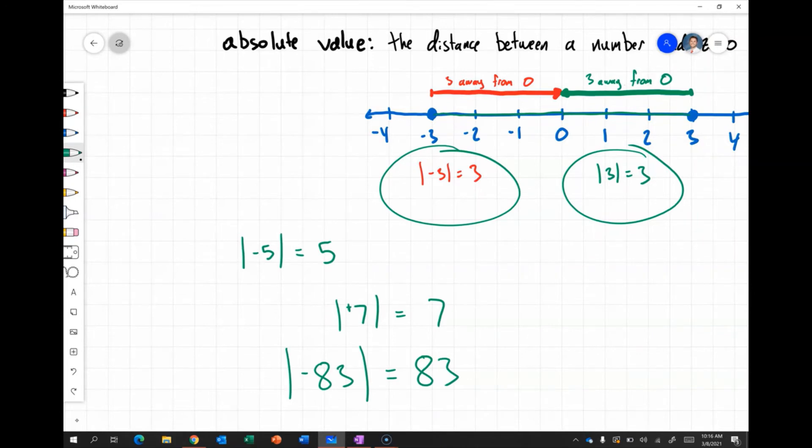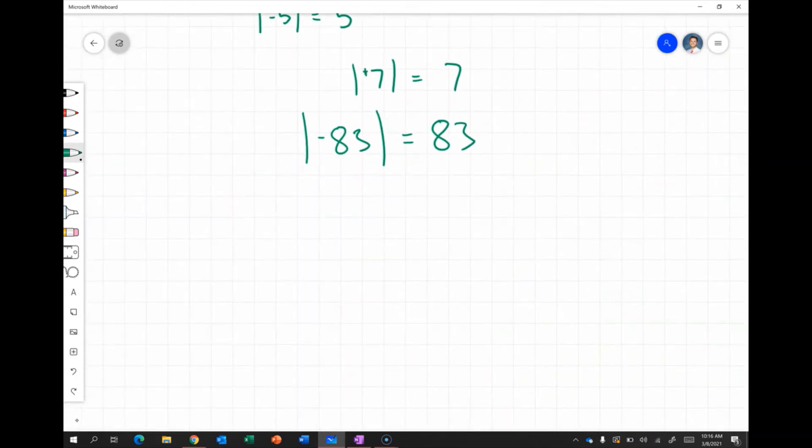Now if we wanted to compare or order values, for example, if we wanted to compare 2 and the absolute value of negative five, which is greater: 2 or the absolute value of negative five?